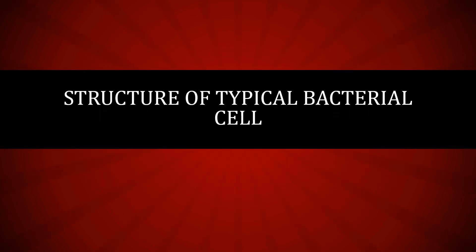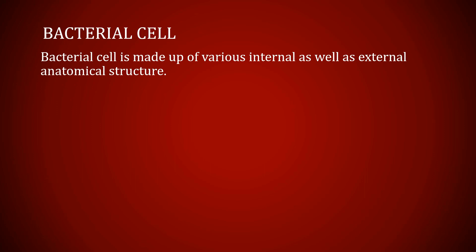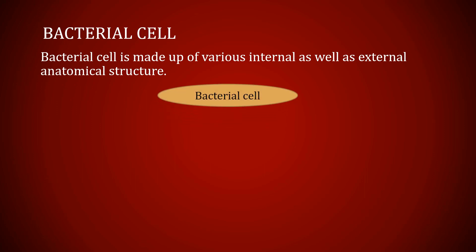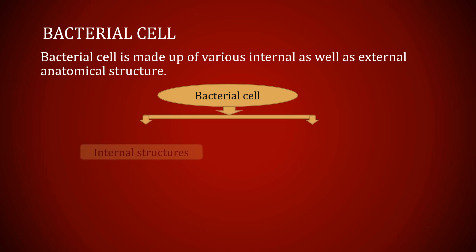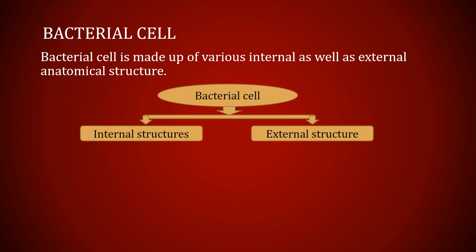Today we are going to study the structure of a typical bacterial cell. A bacterial cell is made up of various internal as well as external anatomical structures. Bacterial cells contain internal structures as well as external structures.